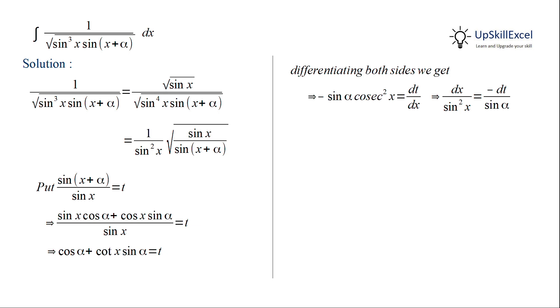Now we'll do the substitution in terms of t. So 1 over sin squared x will be substituted by minus 1 over sin α, and the square root of sin x over sin(x + α) will be substituted by 1 over the square root of t. Now minus 1 over sin α is a constant, and the integration of 1 over the square root of t is 2 times the square root of t.